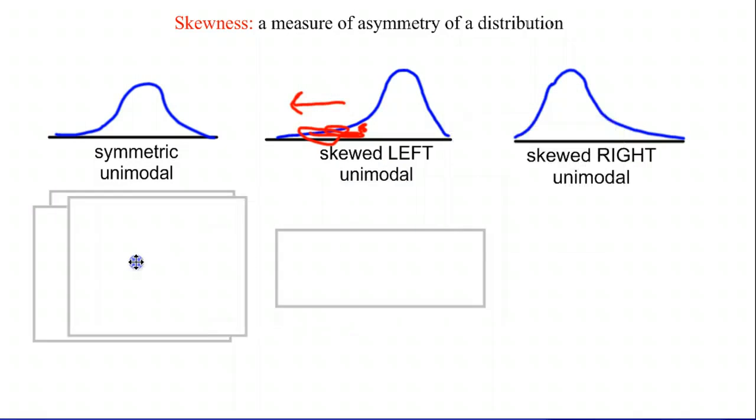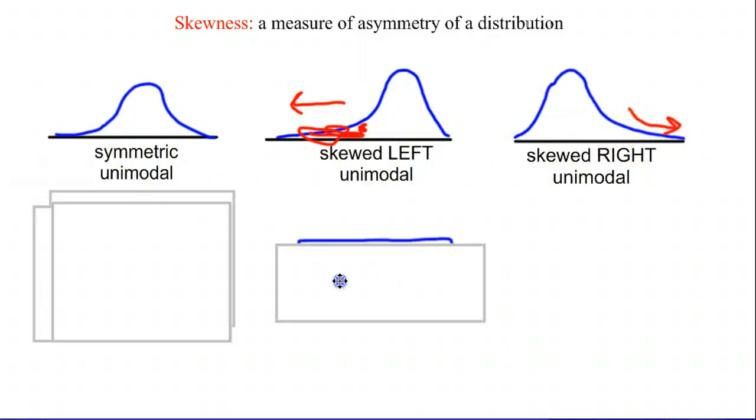And then same idea the other direction. If we have a tail to the right, we're going to say that we are skewed to the right. Now, all of these say unimodal under them, and we'll talk about that in a second.